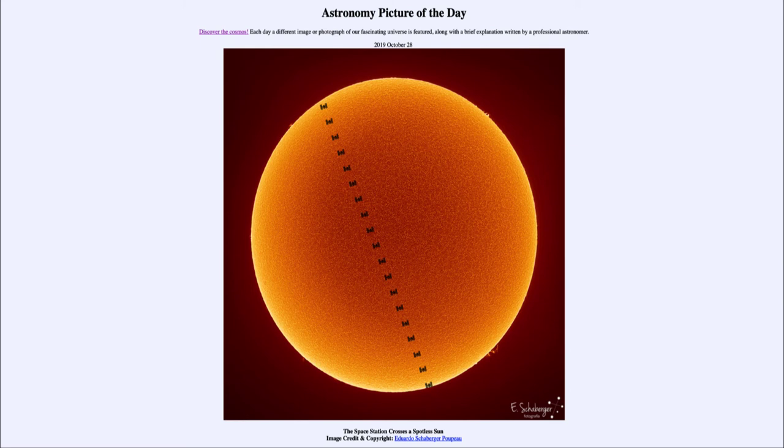That was our picture of the day for October 28th, 2019, titled The Space Station Crosses a Spotless Sun. We'll be back again tomorrow for the next picture, previewed to be Red Robot. Until then, have a great day everyone, and I will see you in class.